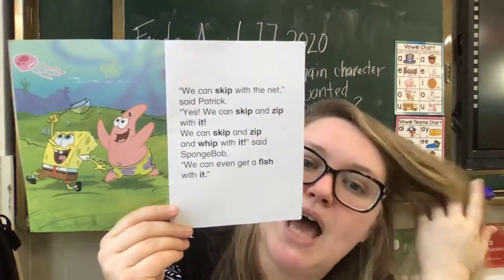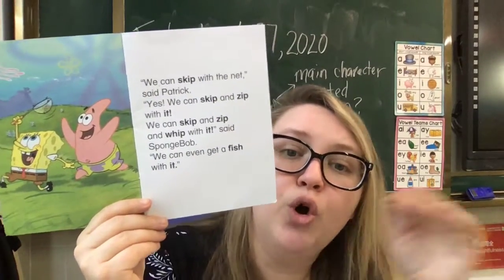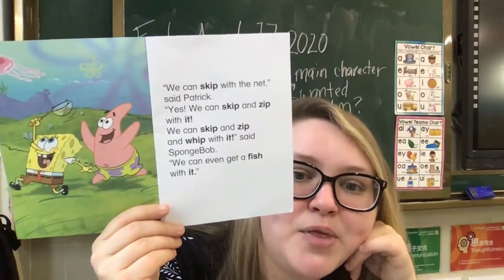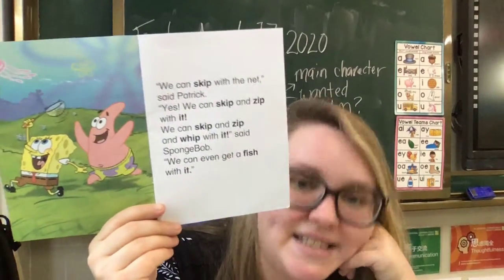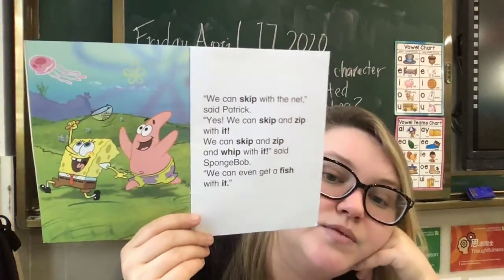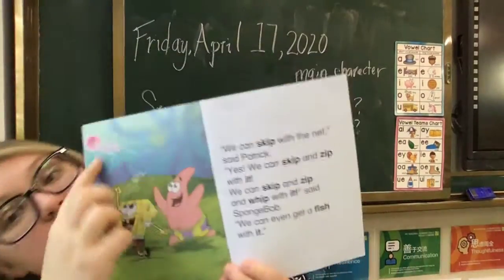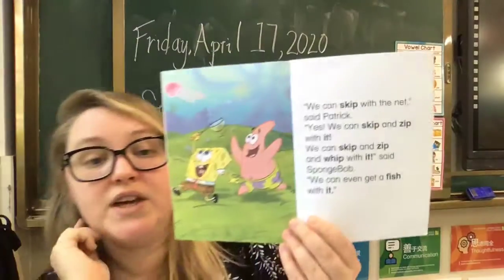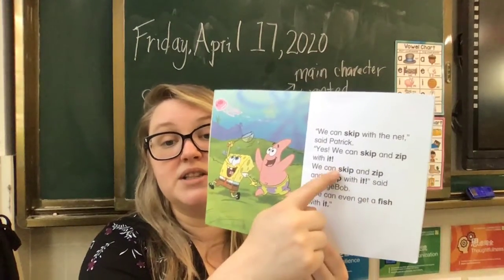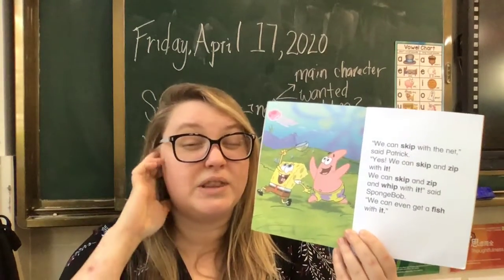'We can skip with the net,' said Patrick — Patrick has a deeper voice. 'Yes, we can skip and zip with it. We can skip and zip and whip with it,' said Spongebob. 'We can even get a fish with it.' So we could also say Spongebob wanted a fish — a jellyfish — he wanted to skip, he wanted to zip and whip with it. There are many things we can say about what the character wanted.